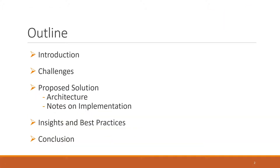Here is the outline of today's presentation. First, I'd like to give a brief introduction to the problem and our goal. Then we'll focus on the highlights of our research challenges. Next, I'll describe the architecture and implementation of our proposed solution. After that, I'll share the insights and best practices that emerged during our work. Finally, I'll describe the applicability of our findings to leverage implementing a generic production-grade anomaly detector.